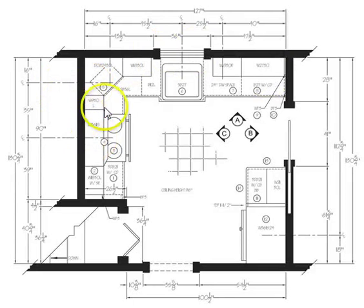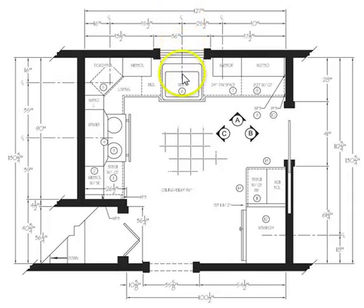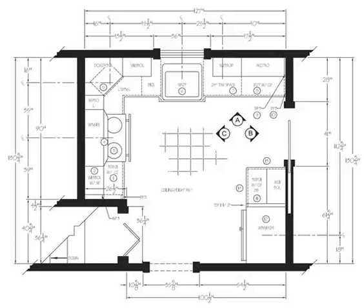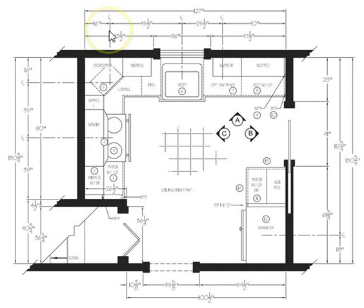The line that goes from the middle dimension string to the fixture or appliance is not a solid line. This line helps indicate where the center line is and what fixture the measurement refers to. This line is a long-short dash — long dash, short dash, long dash, short dash — just to help signify the center line. Depending on your software, this line type may be referred to as 'phantom.' If you're hand drafting, remember to draw long-short dash. Without that line it can be confusing and harder to read.